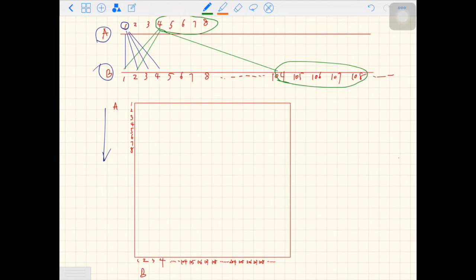Since they are the same, you put a dot on the two-dimensional matrix at 4 and 104. It's about here. And then you keep going A4 and B105, A4 and B106.